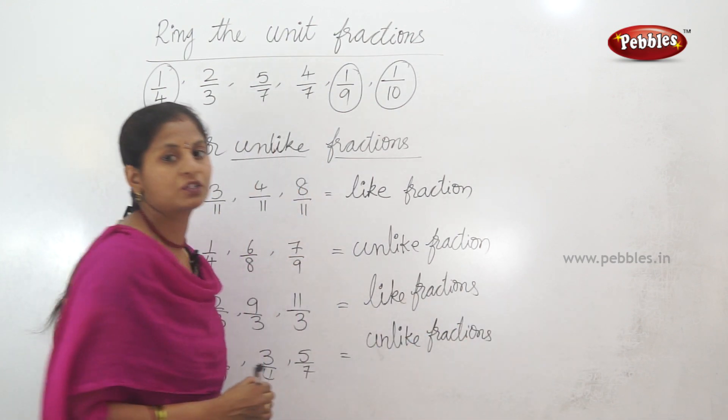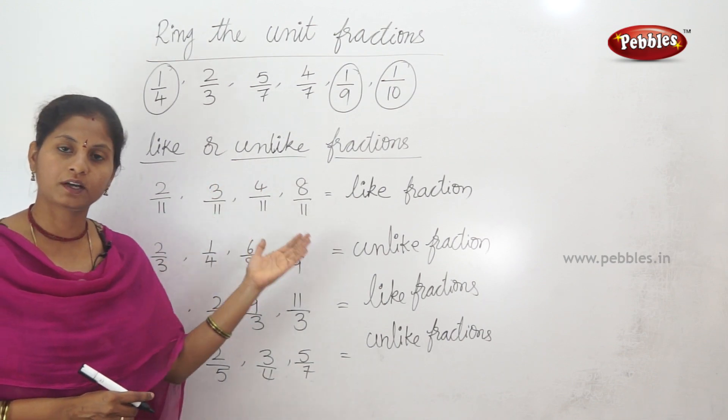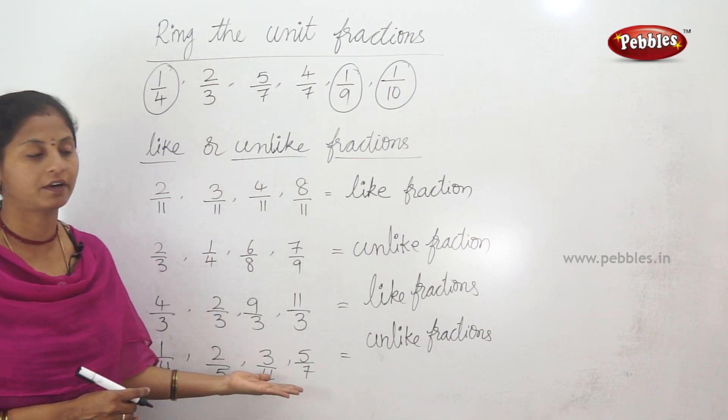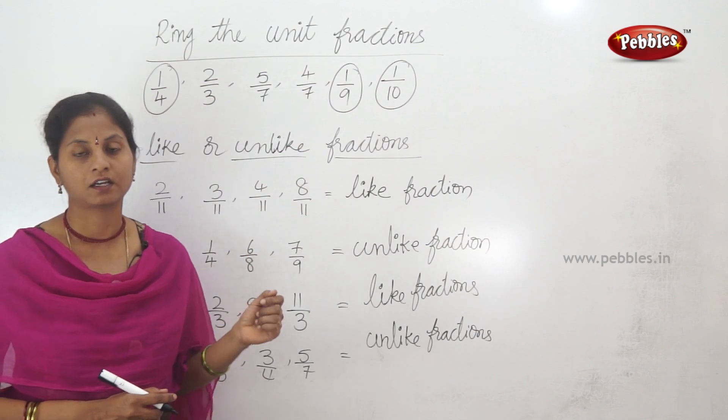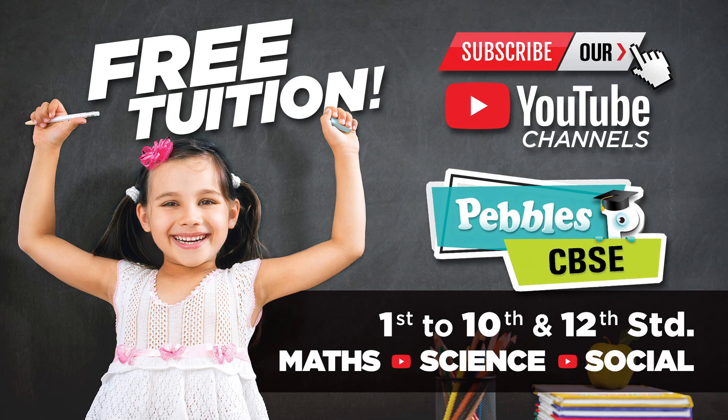So this topic is very easy. To summarize: unit fractions have numerator 1, like fractions have the same denominator, and unlike fractions have different denominators. If you haven't seen this video, click the like button and click the subscribe button.